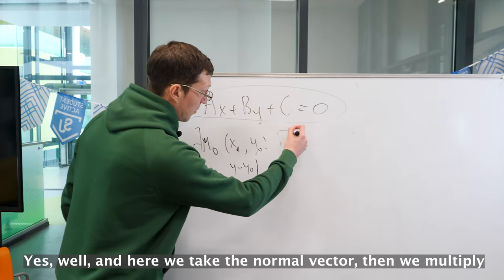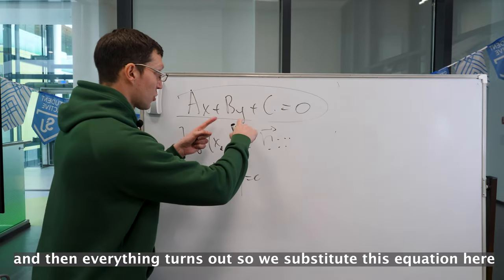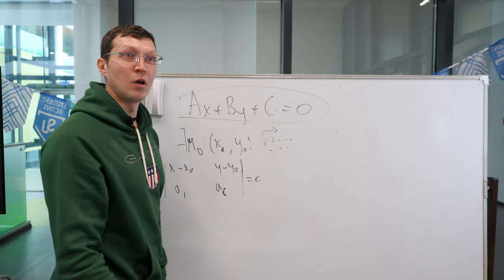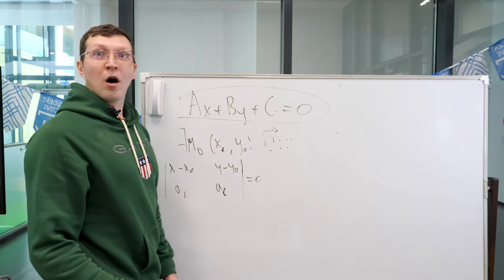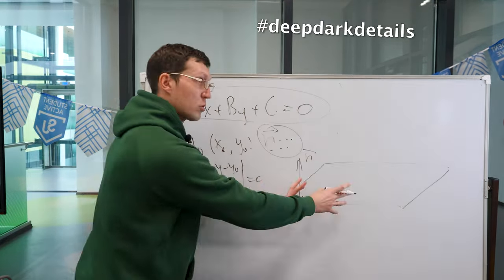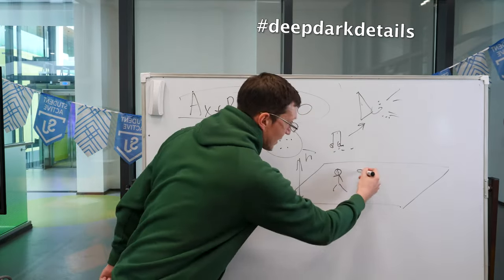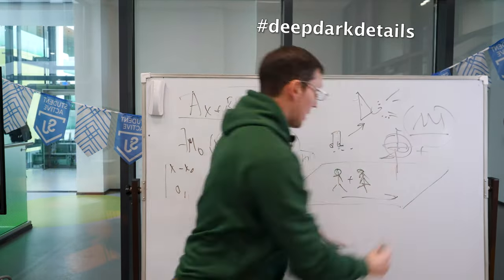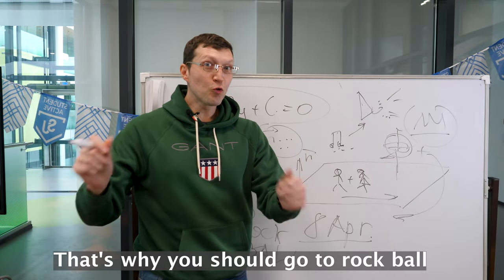Here we take the normal vector, we multiply it, and then it turns out that it's a comparison, and we put it here. That is why you should go to the rock ball.